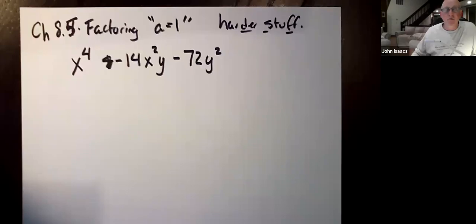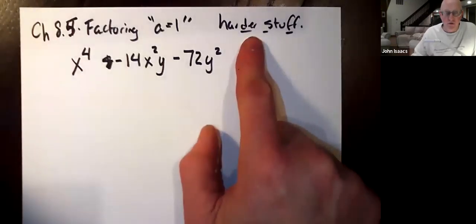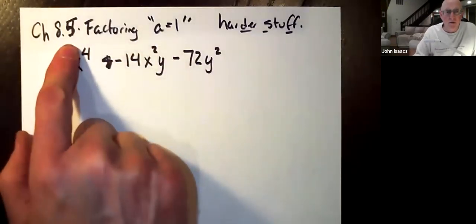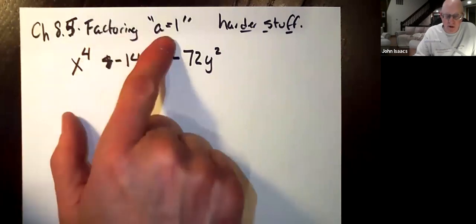So this is our fifth video this chapter, and last, and now we're going to do some harder stuff. And I realized it's chapter 8.5. I've been labeling it wrong the whole time. So change your notes. Chapter 8.5, factoring A equals 1.